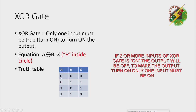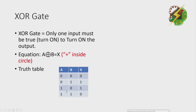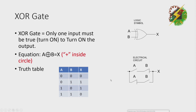Truth table. We have A at 0, B at 0, and output 0. We have A at 0, B at 1, and output 1. We have A at 1, B at 0, and output 1. As stated, 1 input must be true to turn on the output. In XOR gate, if both inputs are true, the output will be 0. We have A at 1, B at 1, and output 0. The logical symbol for XOR gate is this one, and the equivalent electrical circuit is this one.